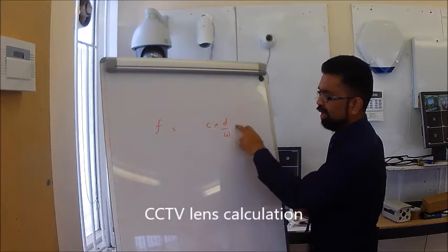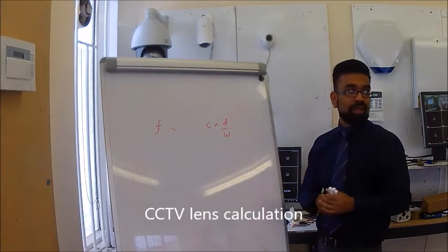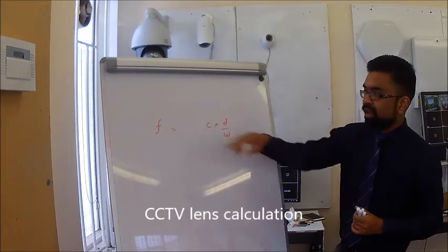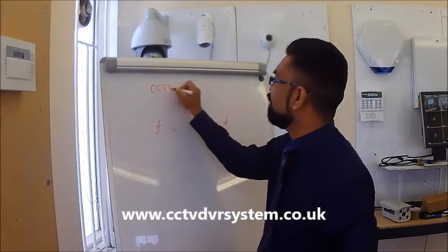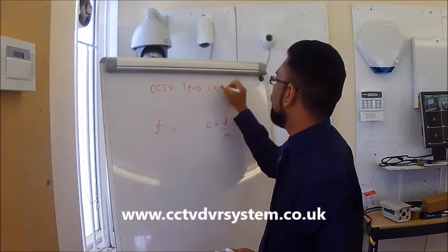C times D divided by W. I am going to explain what these elements are. This is the CCTV lens calculation.